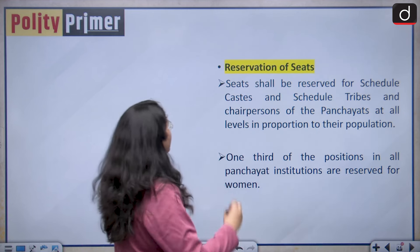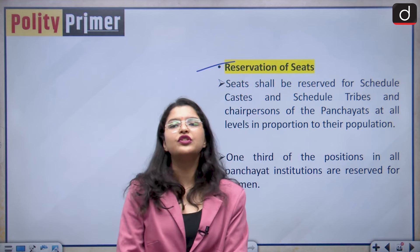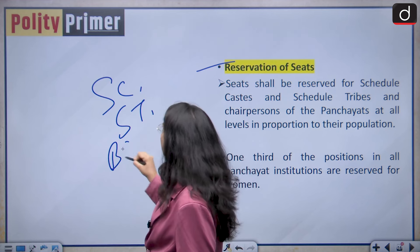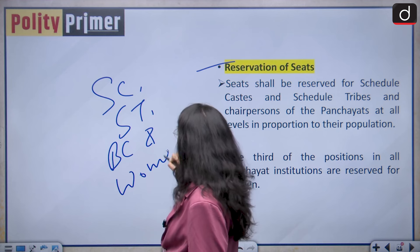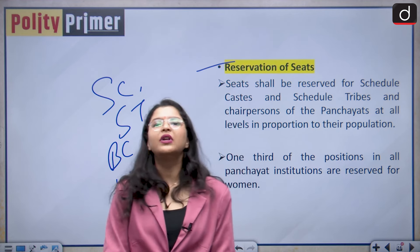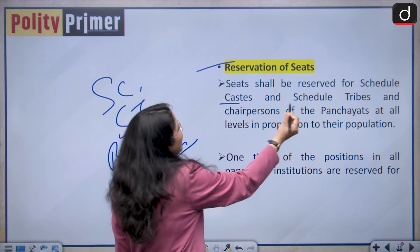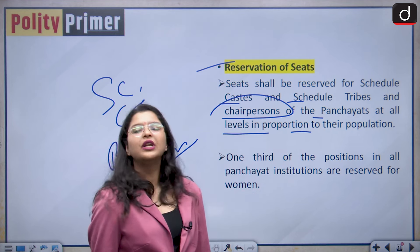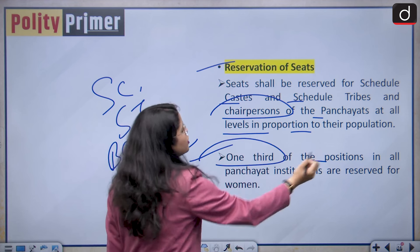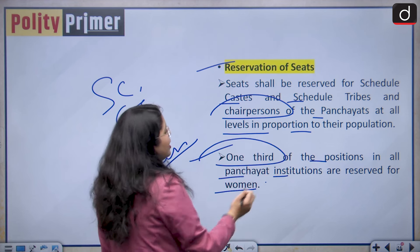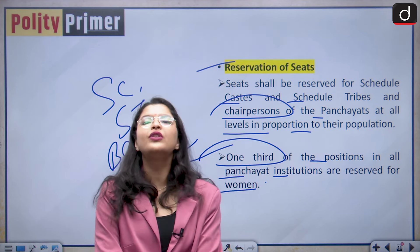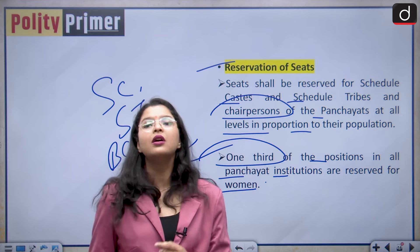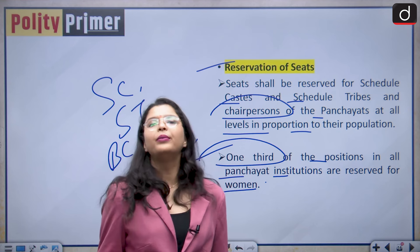Regarding reservation of seats, there is a provision for reservation of seats for the SC community, ST communities, backward classes, and women. The reservation system for SCs and STs and chairpersons of Panchayats at all levels is in proportion to their population. One-third of the positions in all Panchayat institutions are reserved for women. Do let me know in the comment box which article specifically talks about this one-third reservation for women, as this is a most frequently asked question in competitive examinations.